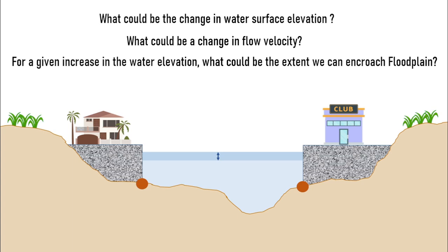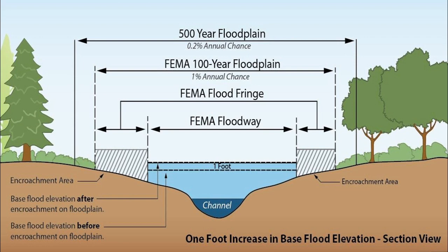For our analysis, we will be using few terminologies coined in FEMA guidelines. Let's look into that. First is the base flood. It is the flood that has 1% probability of exceeding any given year, and it is also referred to as 1 in 100 year return period flood.